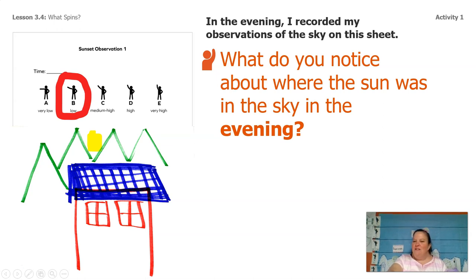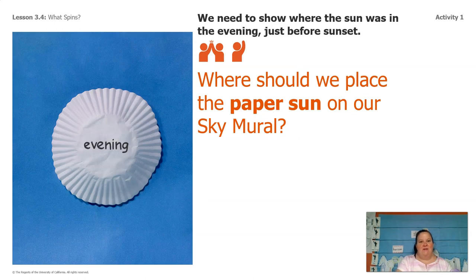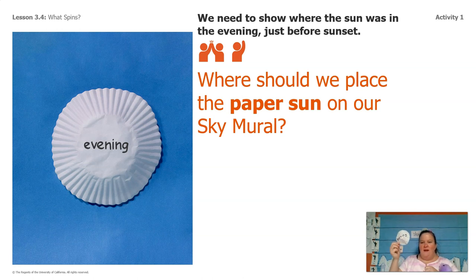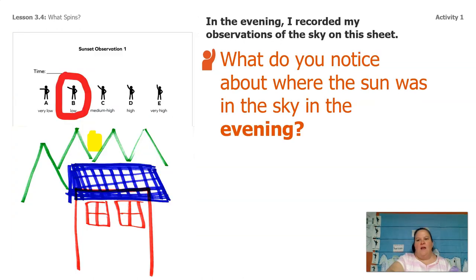Were you guys able to make evening predictions as well? What do you notice about where the sun was in the sky that evening? My next step is to put my paper sun on the sky mural to show where the sun was in the evening. Let's remember where I put it in the sketch and figure out where to put it on the mural — we'll look at what part of the horizon my husband was standing in front of.